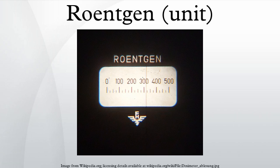One Röntgen of X-rays may deposit anywhere from 0.01 to 0.04 grays in bone depending on the beam energy. This tissue-dependent conversion from Kerma to absorbed dose is called the F-factor in radiotherapy contexts. The conversion depends on the ionizing energy of a reference medium, which is ambiguous in the latest NIST definition. Even where the reference medium is fully defined, the ionizing energy of the calibration and target mediums are often not precisely known.